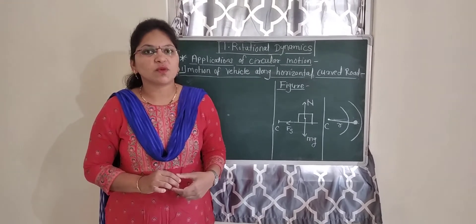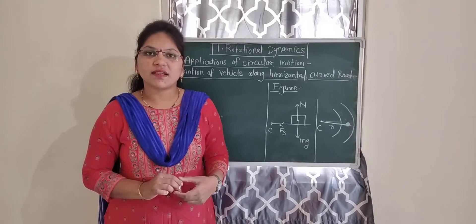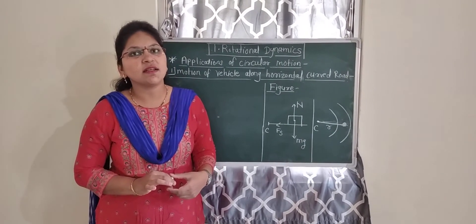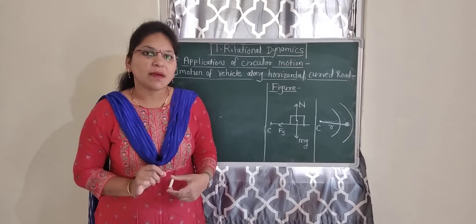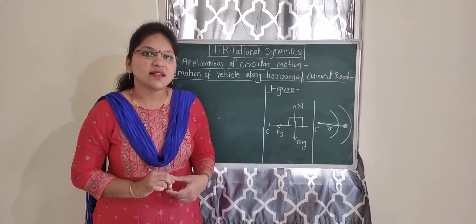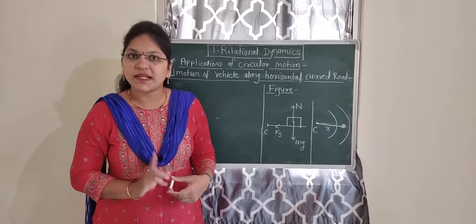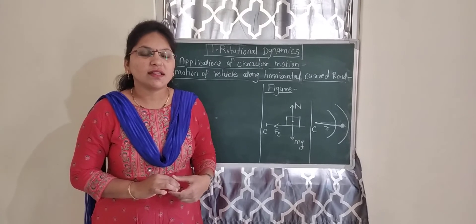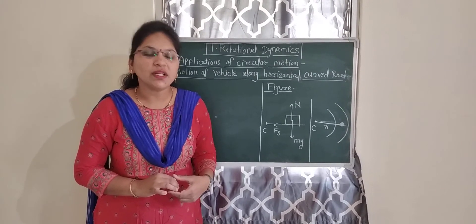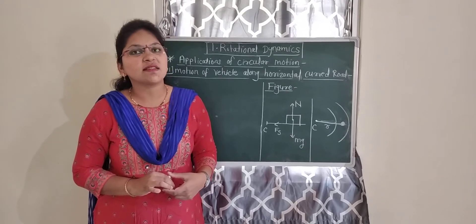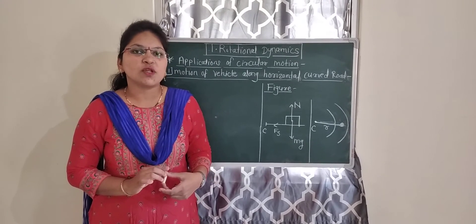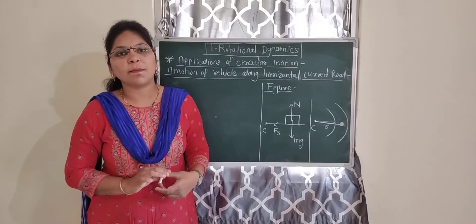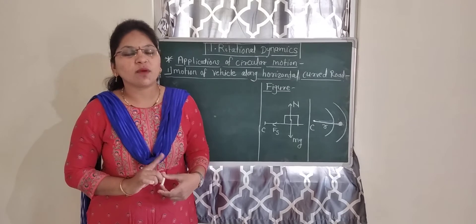What is uniform circular motion? Motion of a particle along the circumference of a circle with constant speed is called uniform circular motion. Examples include the motion of the moon around the Earth, and the motion of the minute hand, hour hand, and second hand in a clock. This is uniform circular motion.